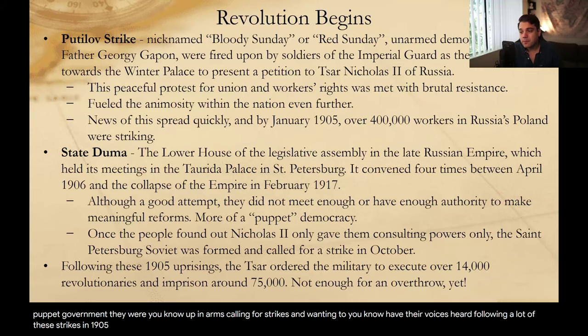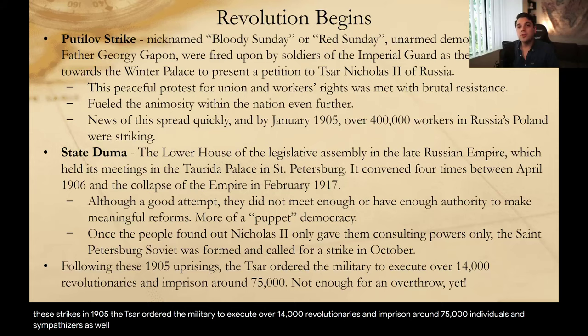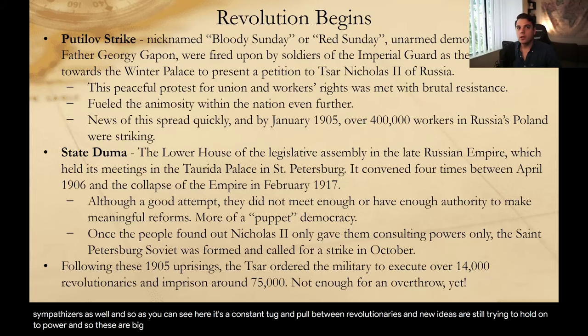Following a lot of these strikes in 1905, the Tsar ordered the military to execute over 14,000 revolutionaries and imprison around 75,000 individuals and sympathizers as well. It's a constant tug and pull between revolutionaries and new ideas, and the Tsar still trying to hold on to power. These are large groups of people — huge movements.